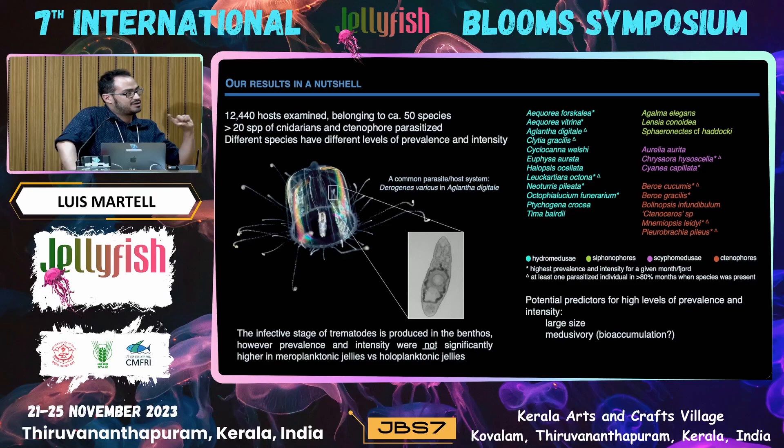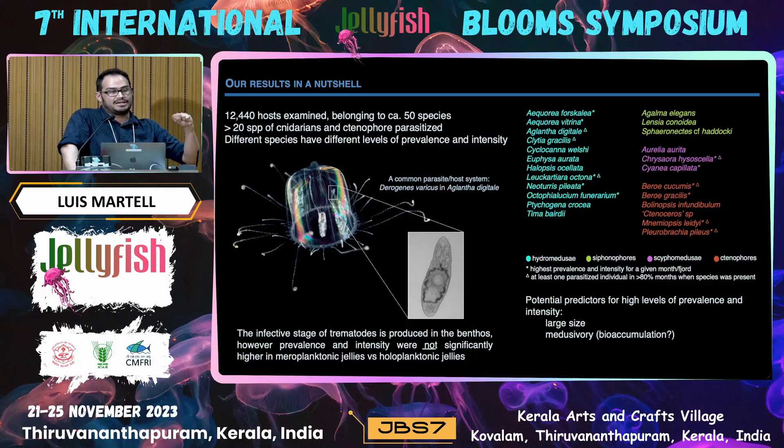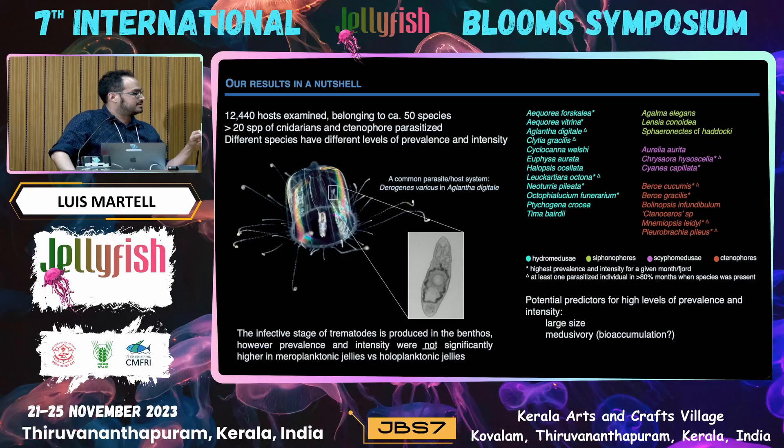What we discovered is that we expected the meroplanktonic species to be more parasitized, because the cercariae are produced by the intermediate hosts and would penetrate the jellies when being released — sometimes even the polyps are present or they are on top of substrates that already host metacercariae. But this was not the case, or at least it isn't until now — I have to take a better look at the data.